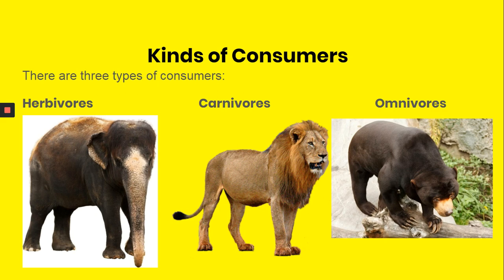Now let's look at three types of consumers. There are herbivores, like elephants; carnivores, like lions; and omnivores, like black bears.